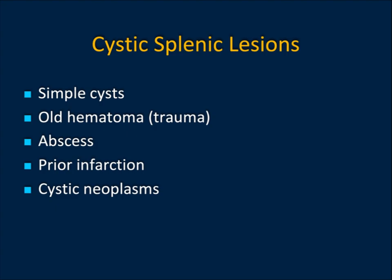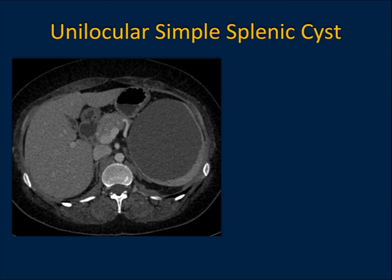In terms of incidental findings, it's not uncommon to see splenic lesions that are cystic — these could be simple cysts, particularly epithelial cysts or epidermoid. Old hematomas, sometimes with calcification, and abscesses are usually not cystic as much as they are low density. Also consider prior infarction, prior bleeds, and cystic neoplasm.